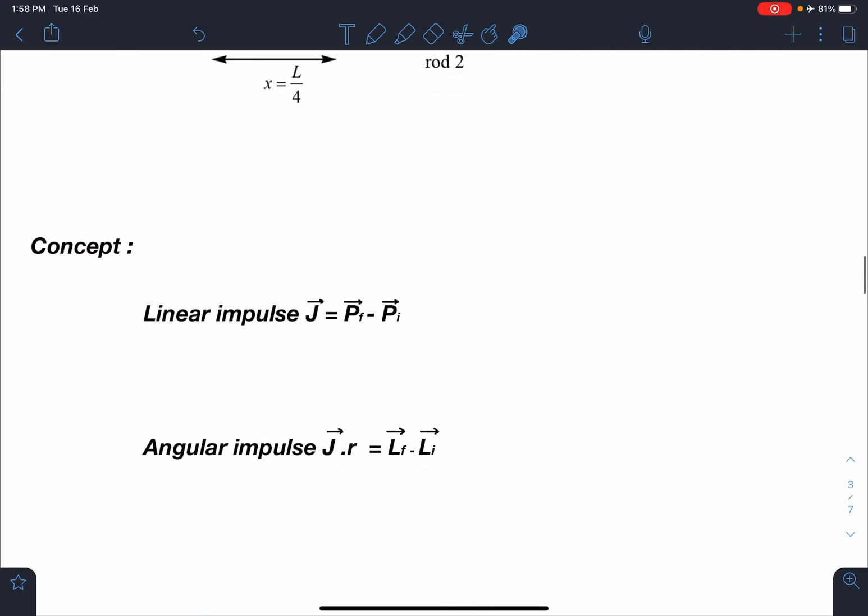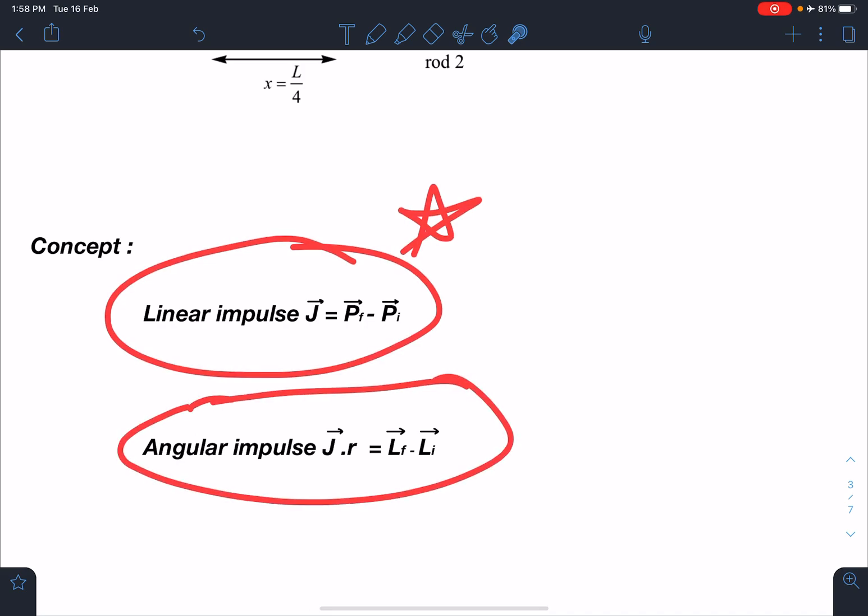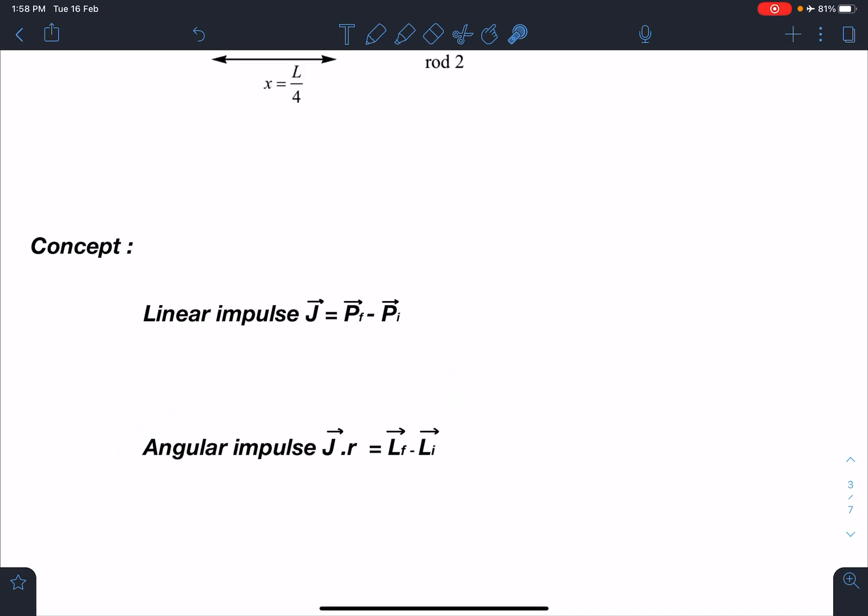The concept part: linear impulse we can write as p final minus p initial, the change in linear momentum. Similarly, angular impulse I can write as J vector - that is nothing but r cross J. This is angular impulse. Actually I should have written this as vector r cross J. I hope you will make this correction here.